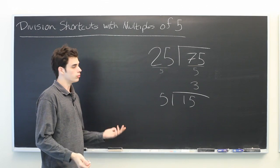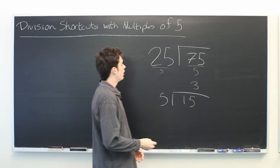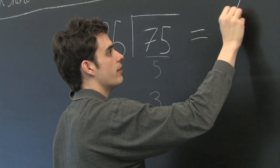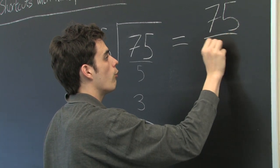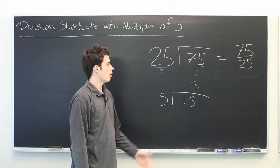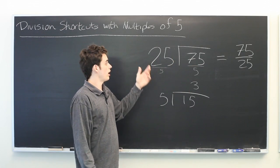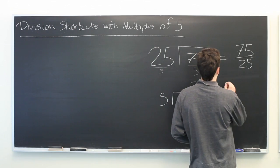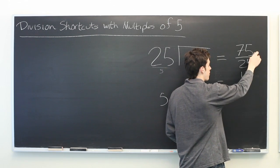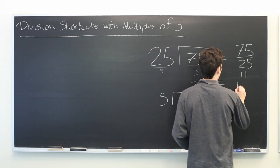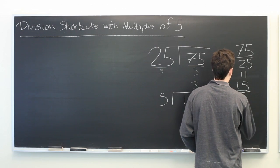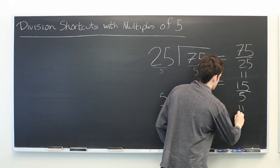So why is this true? Why is this a valid technique? If you rewrite this as seventy-five over twenty-five as a fraction, this is just simplification. Here we're dividing both the top and the bottom by five. We get fifteen over five, which is equal to three.